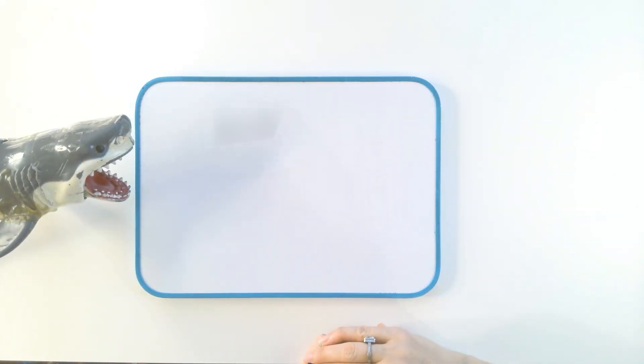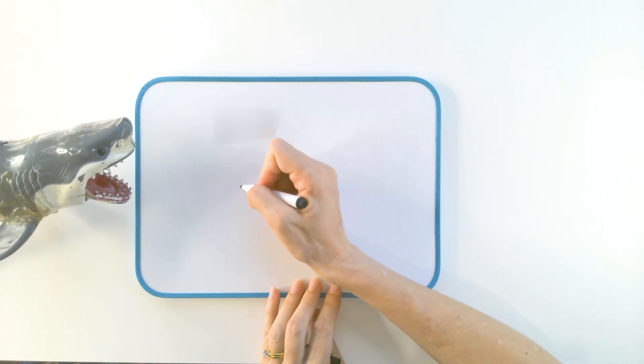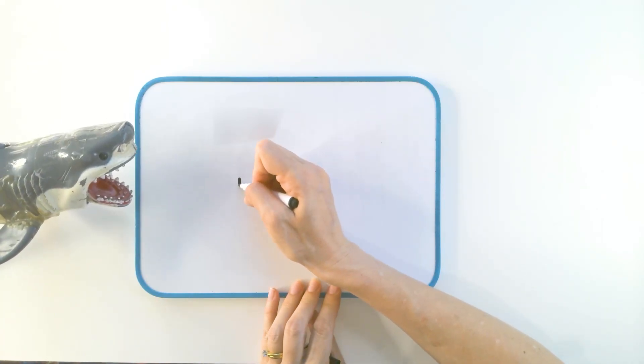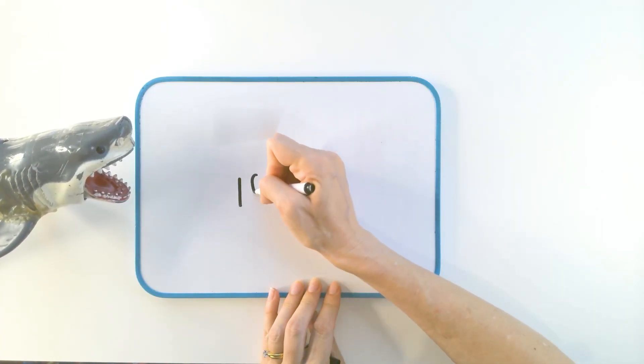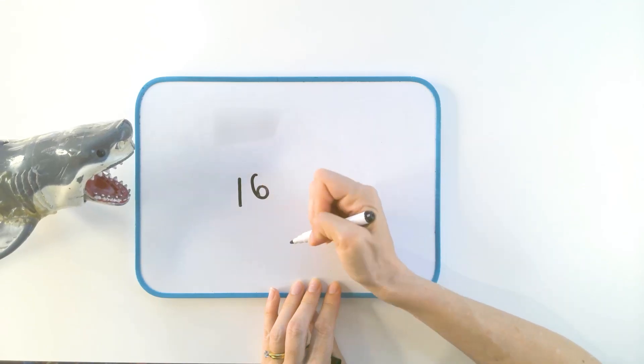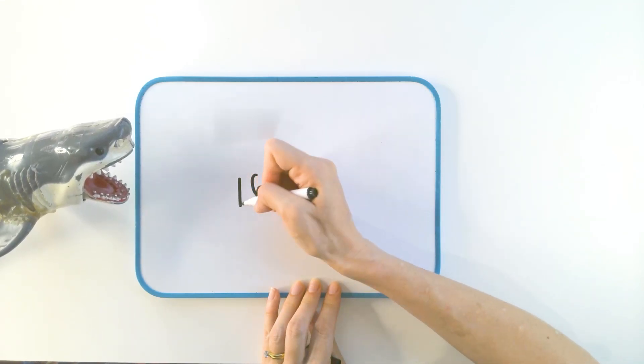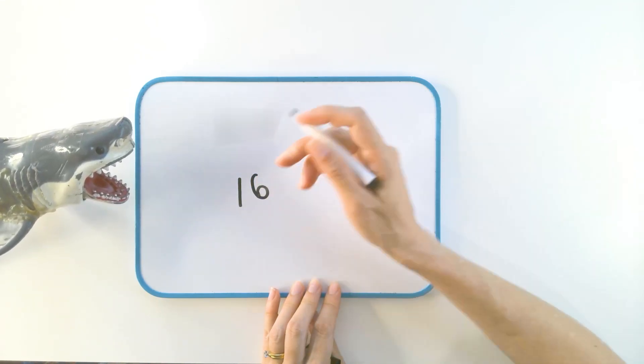In maths, we do not sound out. We use something called place value. We write the tens, and then we write the ones digit. This is the tens digit, and this is the ones digit.